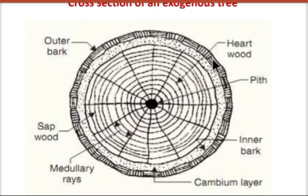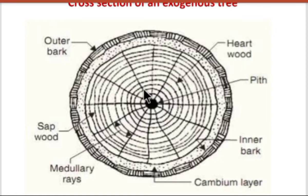Next comes heart wood. The rings which are surrounded by the pith of the tree are called the heart wood. It is normally the strong portion of the tree. It is considered the most strong and durable portion of the tree and provides the most strong timber for engineering purposes.